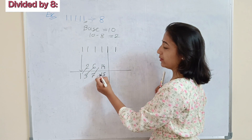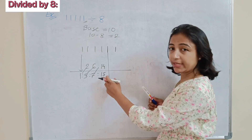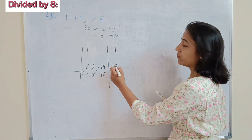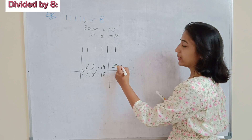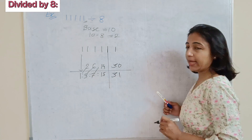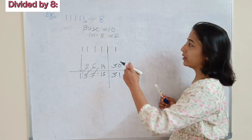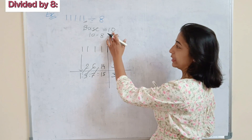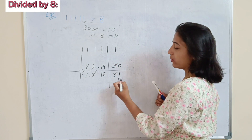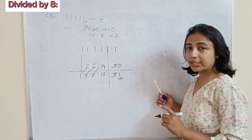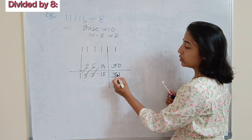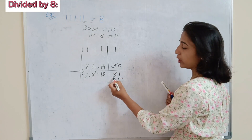Double of 7 is 14, add to the next number: 14 plus 1 is 15. Double of 15 is 30, 30 plus 1 is 31. Since our base number is 10 which contains one zero, we need only a single digit. But 31 is two digits, so the 3 must be carried to the next step.